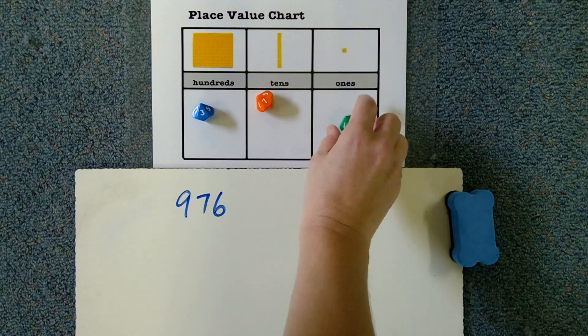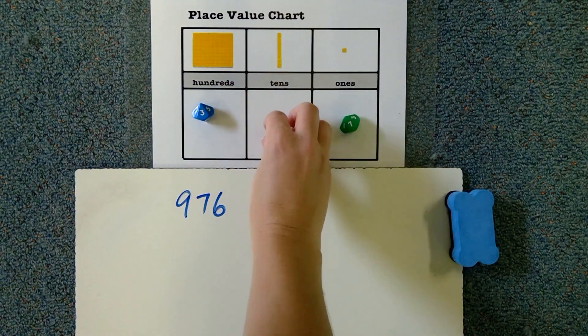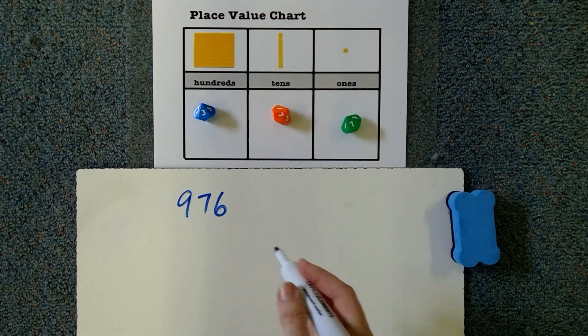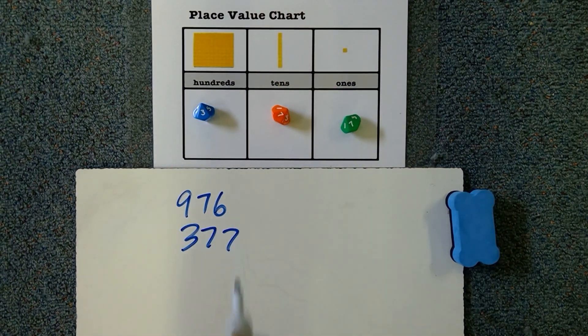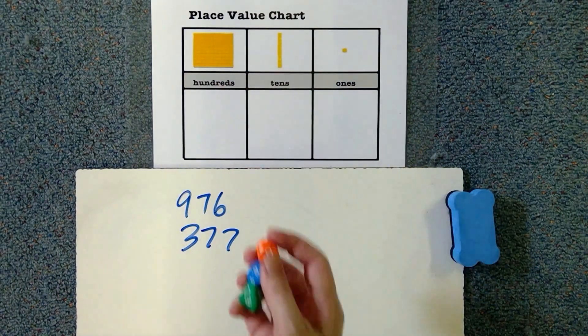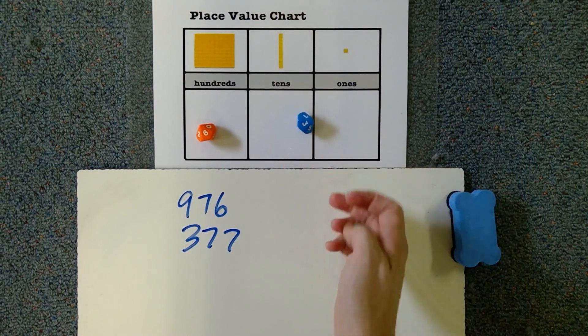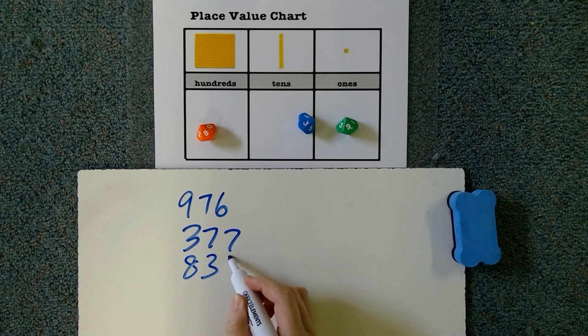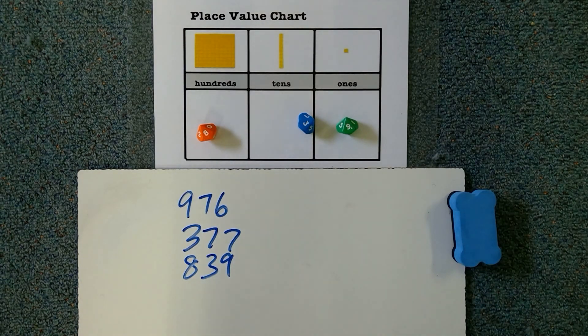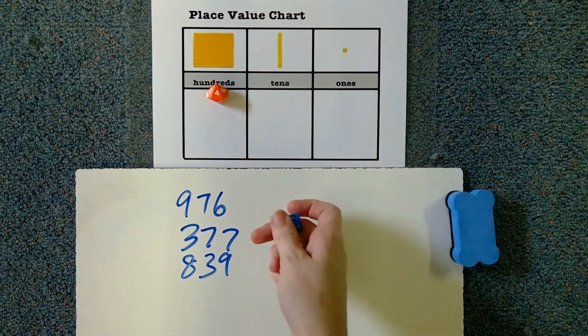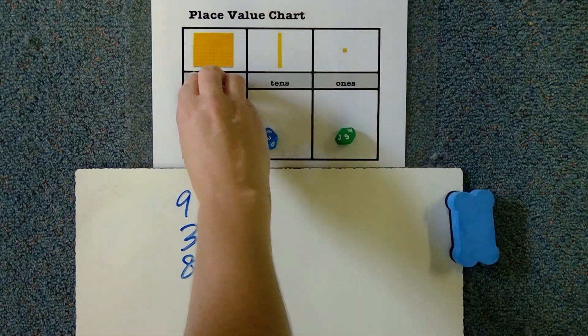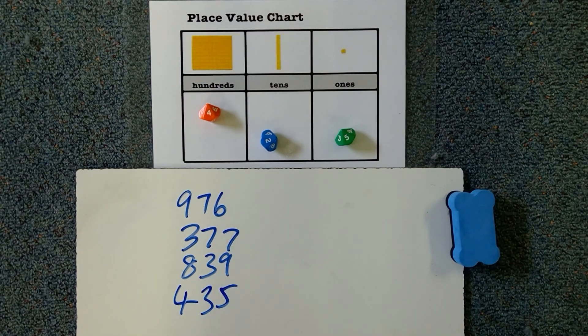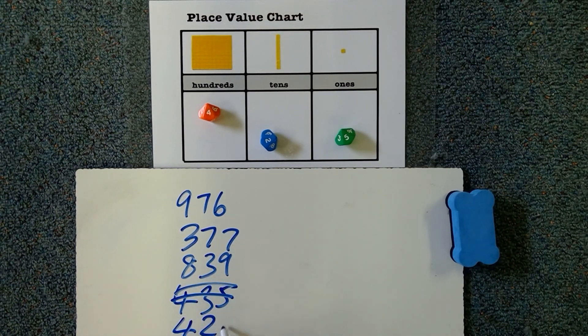That was a seven. Where did my seven go? 377. Two more times. Remember to follow where that nine is. 839. Last one. 400. And whoops, I read that wrong. 425.